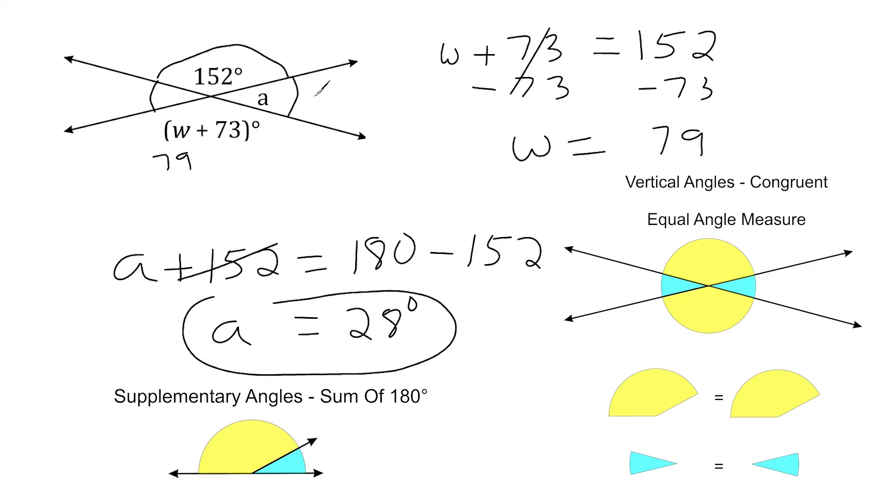So the measure of angle A is 28 degrees, and if you add that with the 152 degree angle, you get that 180 degree sum. And the angle that's opposite from A on the other side, which is a vertical angle with A, would also be 28 degrees. And of course, because this is 152, this angle down here is 152. And if you were to add all four of these angle measures together, because you go all the way around in a circle, you would get 360 degrees total.